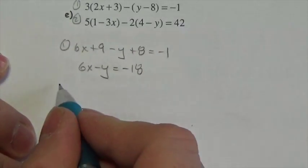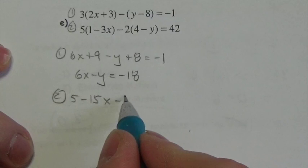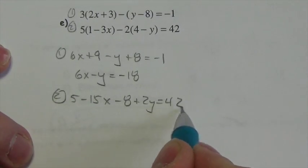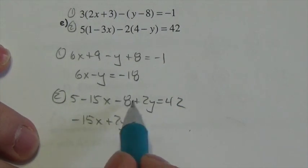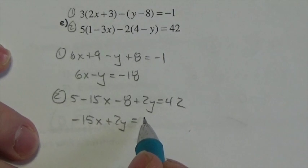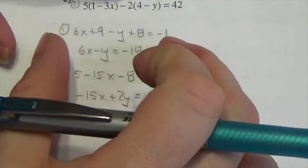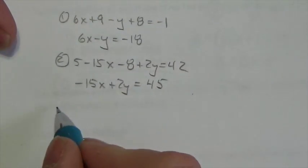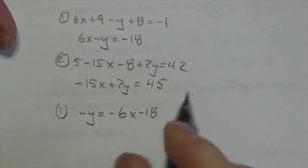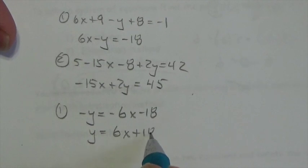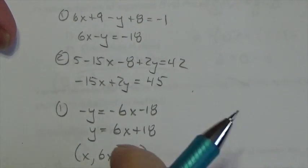Equation two, distributing the 5 through, becomes 5 minus 15x, and distributing the negative 2 gives negative 8 plus 2y equals 42. So negative 15x plus 2y equals — 5 minus 8 is negative 3, bringing that over adds to the other side — 45. Now I have two much simpler equations. I'll solve equation one for y: negative y equals negative 6x minus 18, so y equals 6x plus 18. This gives me the coordinates x comma 6x plus 18.